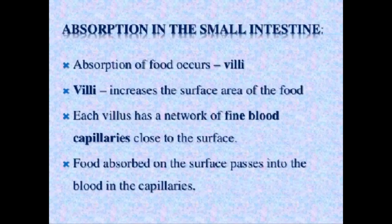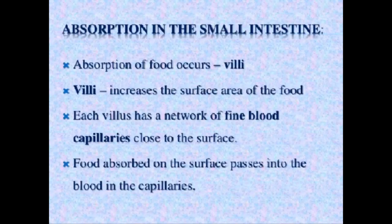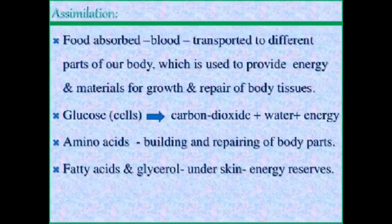Now the absorption in the small intestine — the small intestine has finger-like projections called villi. Villi increase the surface area for absorption. Blood vessels and blood capillaries are present in the villi, which absorb the digested nutrients into the blood. The food is then transported to the body through the blood vessels — this is the assimilation process.